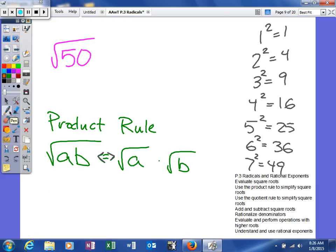Well, 50, we said, is not a perfect square. So we're going to introduce this thing called the product rule. And what the product rule says is if you are taking the square root of a product of two things, A times B, you can break that up as the square root of A times the square root of B.